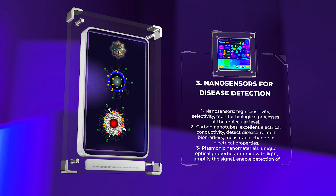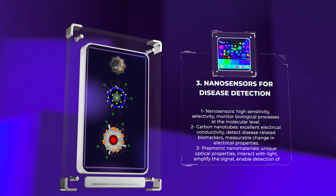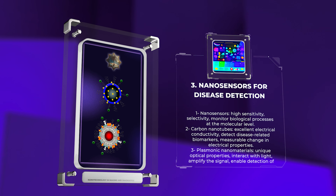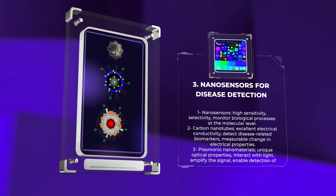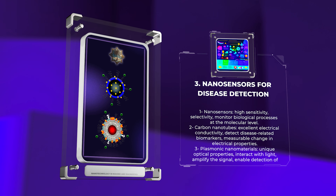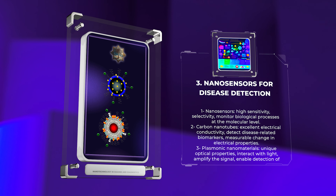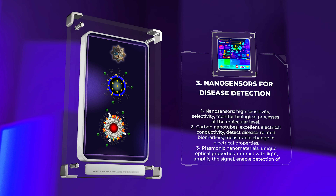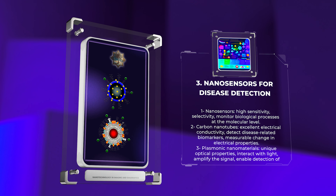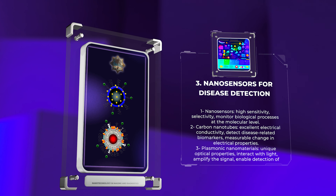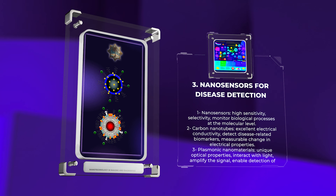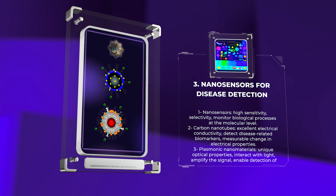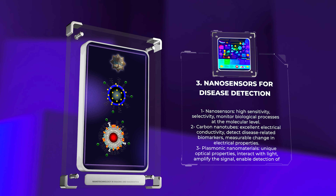Furthermore, plasmonic nanomaterials, such as gold nanoparticles or silver nanowires, have gained attention as nanosensors due to their unique optical properties. These materials can interact with light in a manner that amplifies the signal when binding to target biomolecules, enabling the detection of low concentrations of analytes. The plasmonic resonance phenomenon allows for label-free detection, reducing complexity and improving assay simplicity.